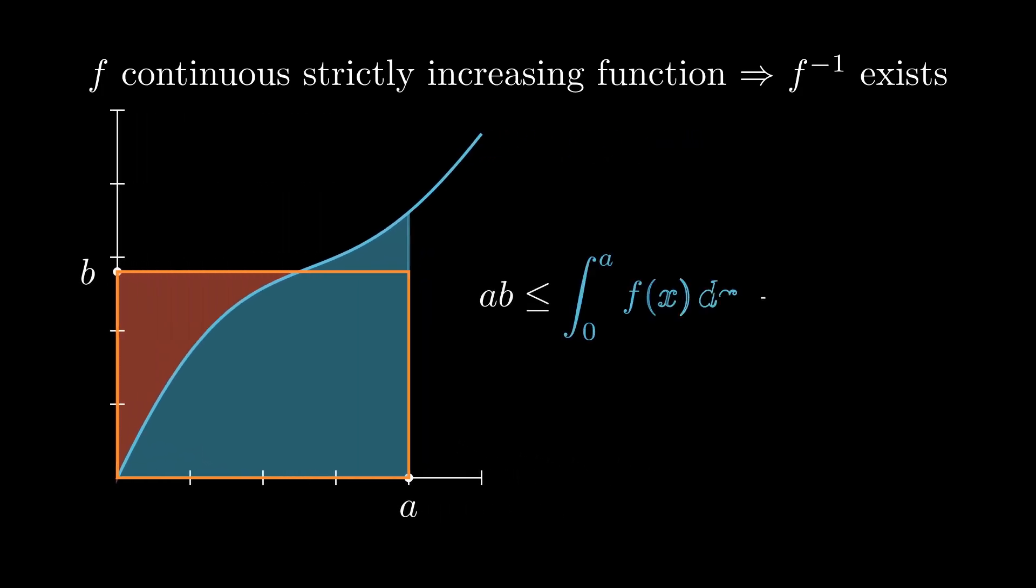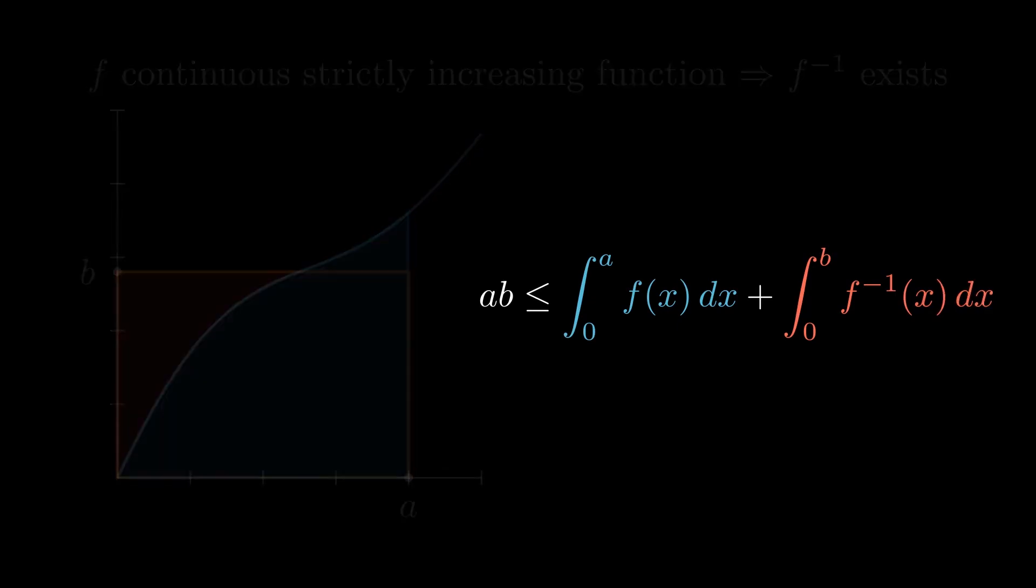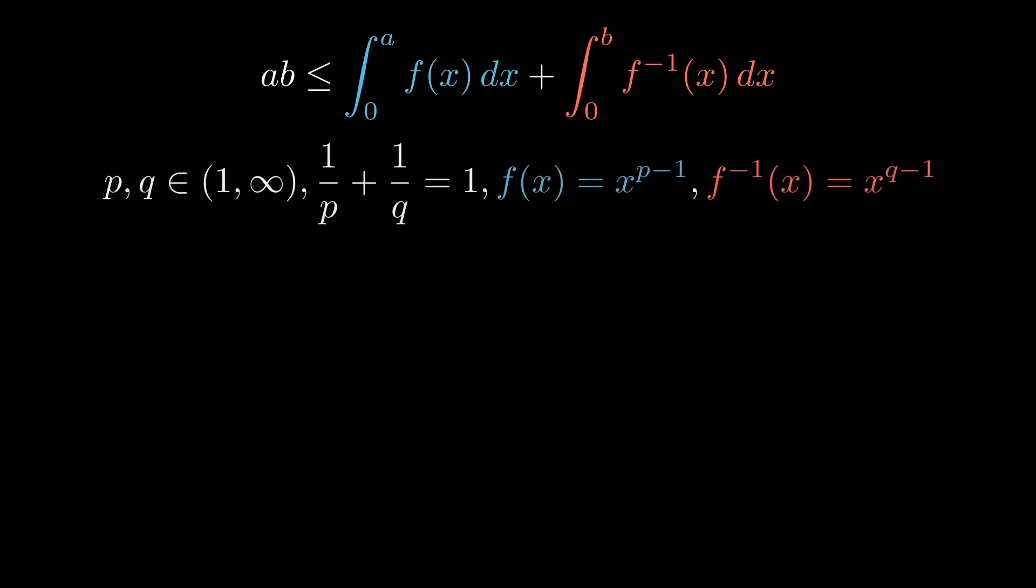Summarizing, we get that A times B is less or equal to the integral of the function plus the integral of the inverse. Let's take a look at a special case of this, where we have two numbers between 1 and infinity, such that their reciprocals sum up to 1. Two such numbers are called conjugates. Then we can define F by this formula, and after some calculations, we get the inverse of F. When integrating, we get that A times B is less or equal to A to the p-th power divided by p, plus B to the power q divided by q, for A and B positive. This result is called Young's inequality.